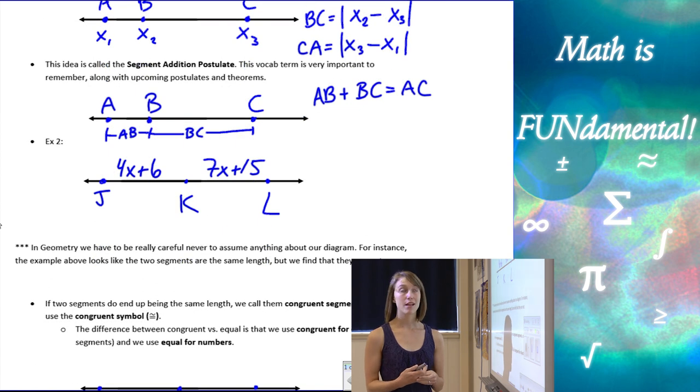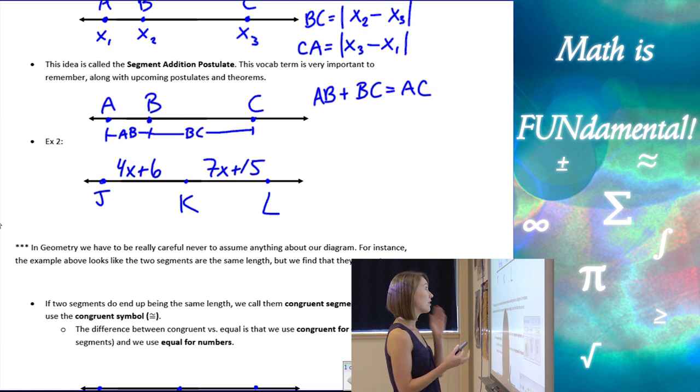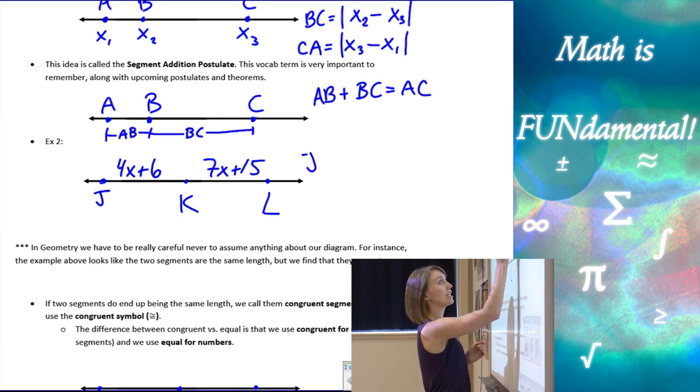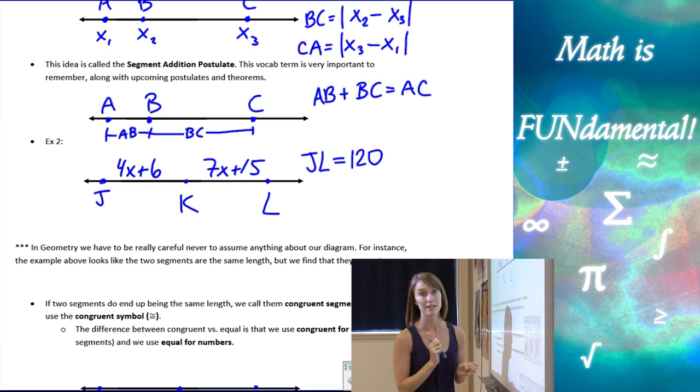So we can use the segment addition postulate to work through our next example. So here, if I know that I have points J, K, and L on my line, J, K, the length of J, K is 4X plus 6. I don't actually know what that length is yet because I don't know what X is, but I know that 4X plus 6 represents that length. 7X plus 15 represents KL. And let's say we were given that the length of JL is 120.